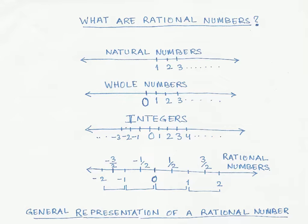So what are rational numbers? We have already looked at natural numbers. Natural numbers start from 1 because that's how we naturally start counting.